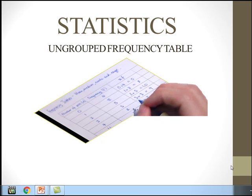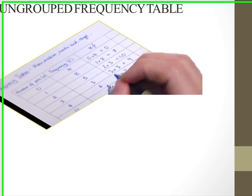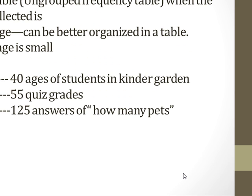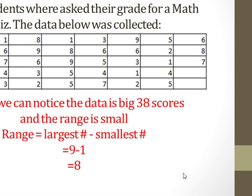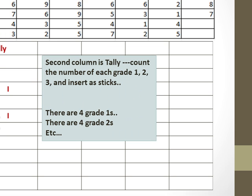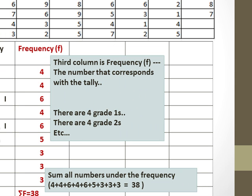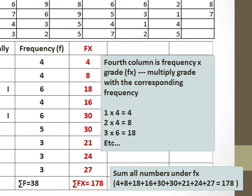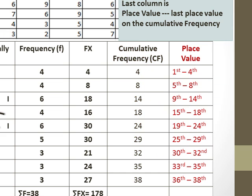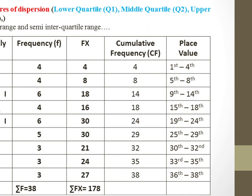Hello everyone, this is the second part on grouped frequency tables. In statistics, the example we will be solving covers how to get column one through column six, including the place value. Now let's continue with this problem.